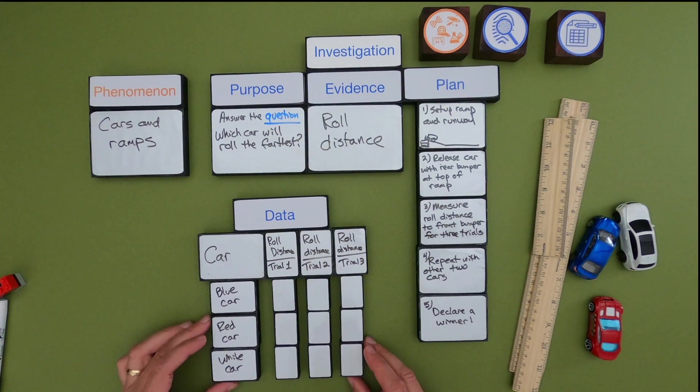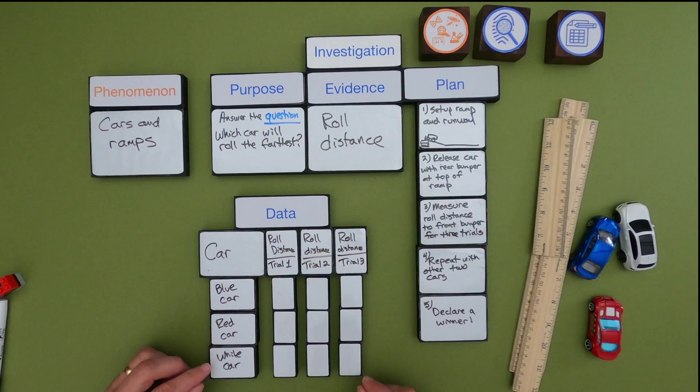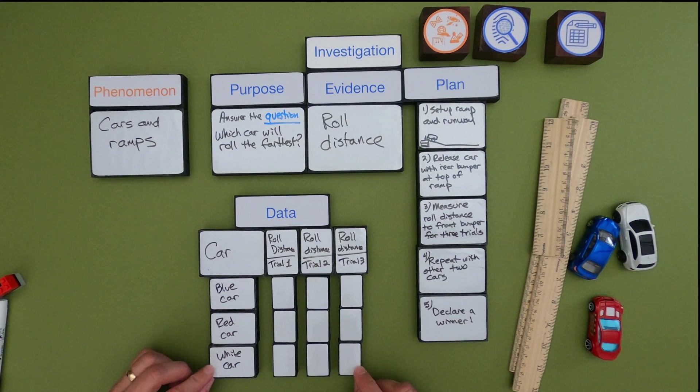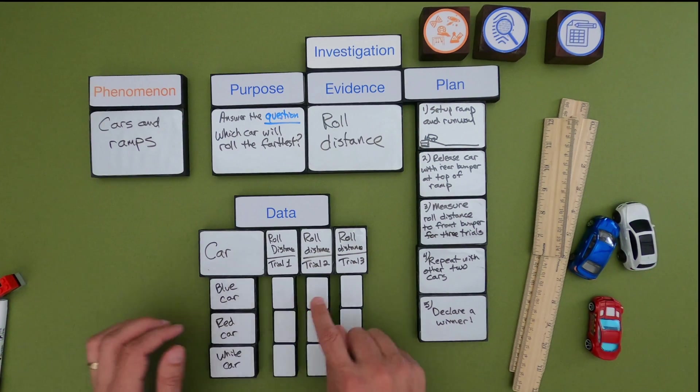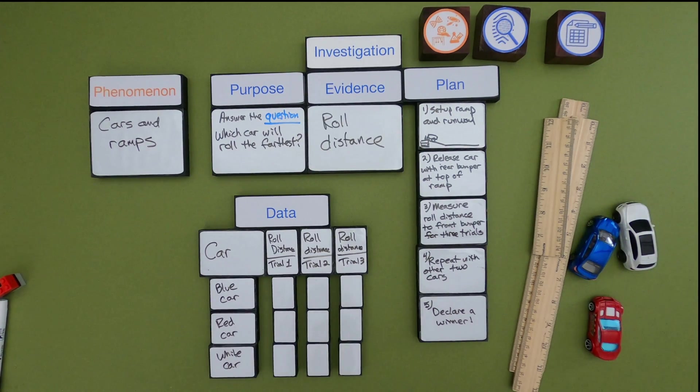Okay so in my data table what I have are the blue car, the red car, and the white car. So those are going to be the cars that I'm going to investigate. I then have three trials. Lots of times in science it's good especially if you're measuring to do things over and over to see how well your plan is working and if it's consistent over time.